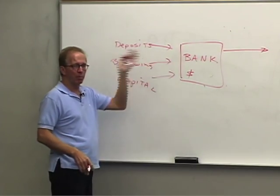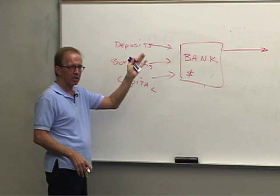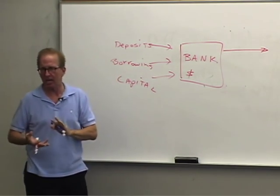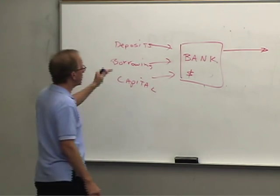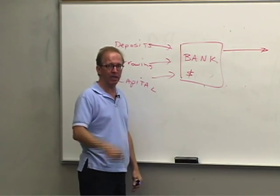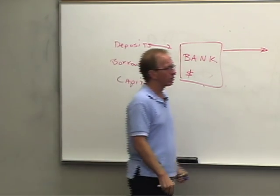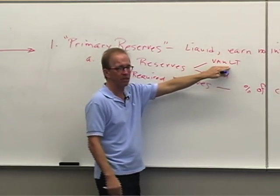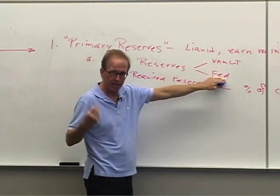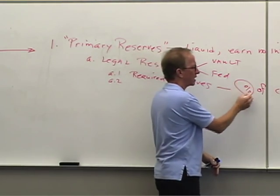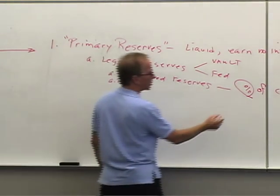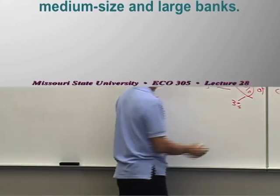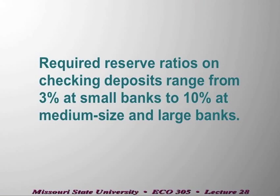When people put money into savings accounts or time deposits, there is no reserve the bank must maintain. But if you put money into a demand deposit or a NOW account, the bank must maintain reserves. Those reserves can be in the vault or at the Fed. The required reserve percentage depends on how big the bank is: for the smallest banks it's 3%, and for medium and large banks it's 10%.